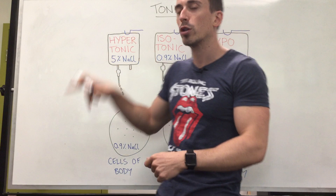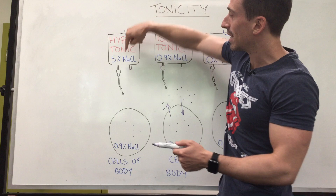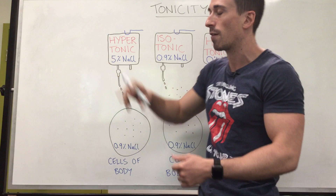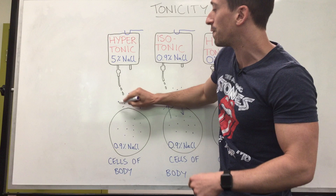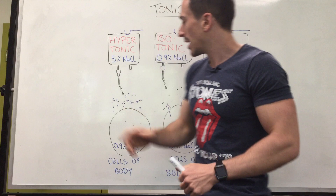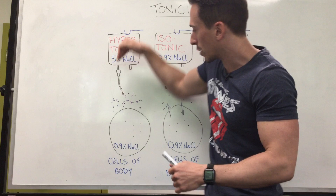If we look at a hypertonic solution — hyper means more than — that means the solution you're introducing to the body is of a higher concentration than the cells' 0.9%. I've chosen 5% as an example, though even 1% or 1.5% would work. So we're introducing a hypertonic solution that is far more concentrated than the cells. Now, these solutes want to diffuse down their concentration gradient into the cell, but cells are surrounded by a phospholipid bilayer that does not let through large and charged particles, so they're not getting through.